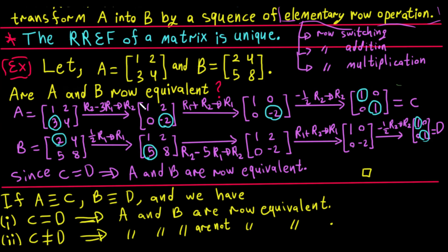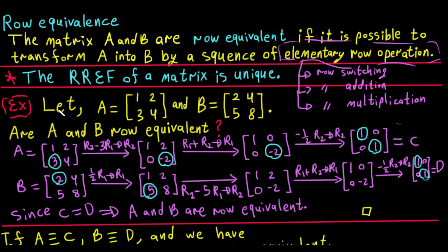In the previous video we talked about transforming matrix A to reduced row echelon form to know if two matrices are row equivalent or not. Here we can say A is row equivalent to the identity matrix — this 2 by 2 identity matrix I.